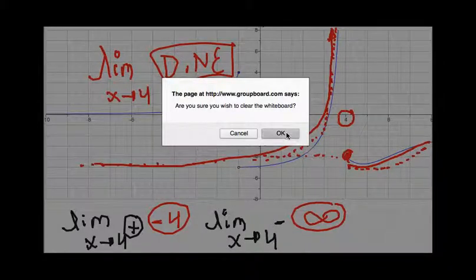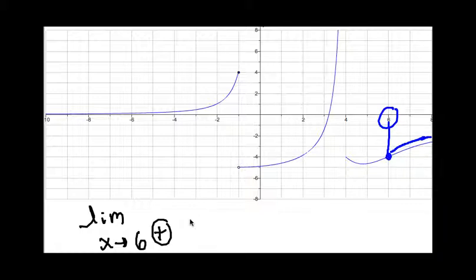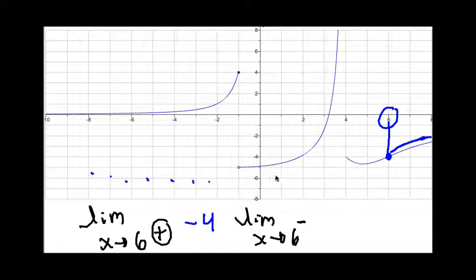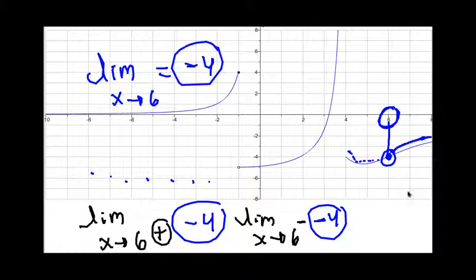Let's find the limit when x approaches 6 from the right. First find your x equals 6. Coming from the right and getting really close, the value is equals to negative 4. What about from the left? I come all the way from the left, get close to 6, and I get the same value: negative 4. Therefore, the limit when x approaches 6 from the right and from the left are both equal to negative 4. Therefore, the limit when x approaches 6 is negative 4. The limit does exist because when you approach from the right and from the left, you get the same number.